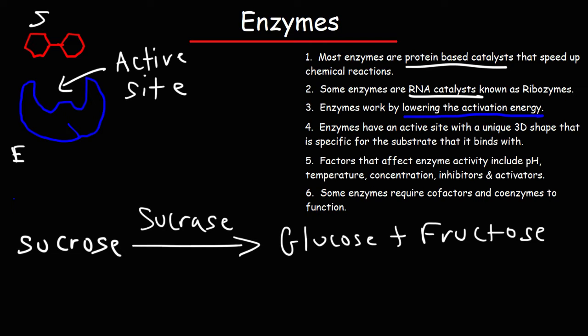There are two types of models you need to be familiar with: the lock-and-key model and the induced fit model. The basic idea of the lock-and-key model is that the substrate fits exactly with the active site of the enzyme, just as a key fits exactly into a lock. With the induced fit model, as the substrate enters the active site, the shape of the enzyme changes slightly so that it fits even better with the substrate — it becomes even more complementary. So the enzyme enhances its shape to fit better with the substrate.